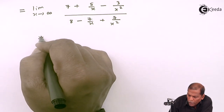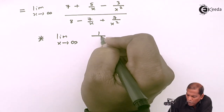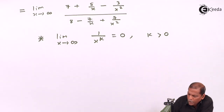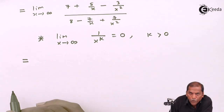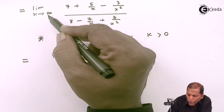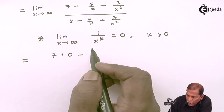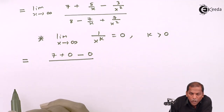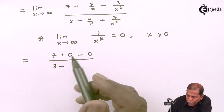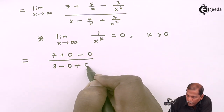Now here we apply the formula that as the limit extends to infinity, 1 upon x and 1 upon x squared tend to zero. Therefore in the present case: 5 upon x as x tends to infinity gives 0, minus 3 upon x squared as x tends to infinity gives 0. In the denominator, 8 minus 7 upon x plus 7 upon x squared — these terms as x tends to infinity give 0.